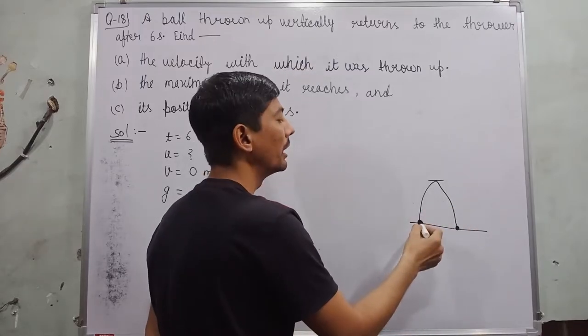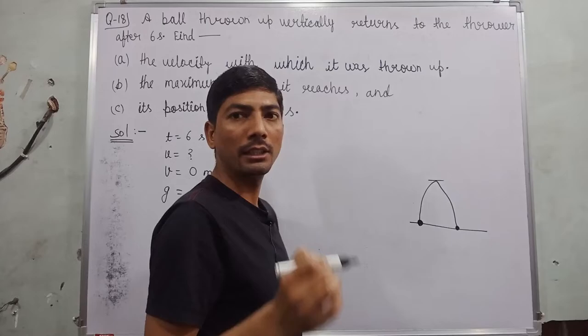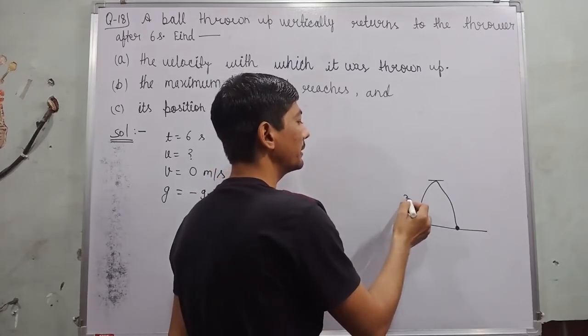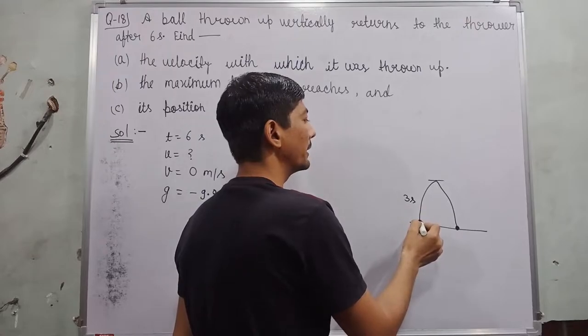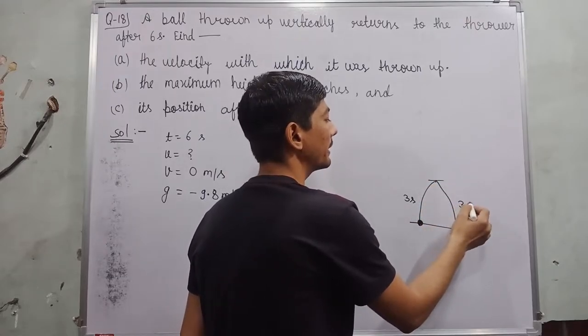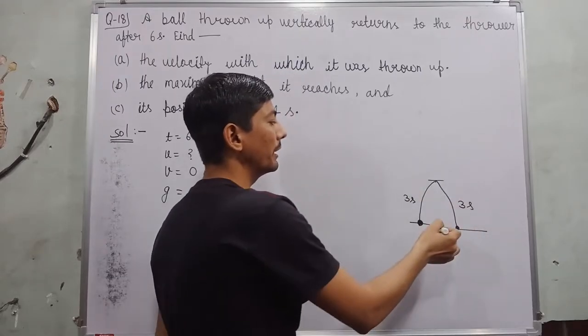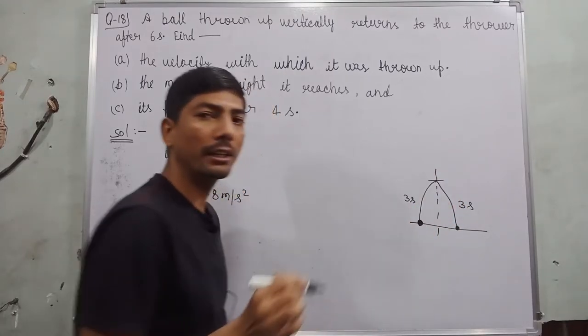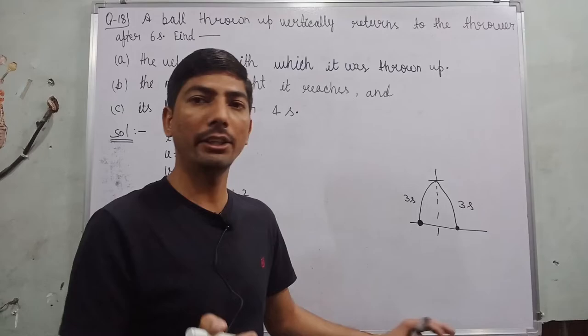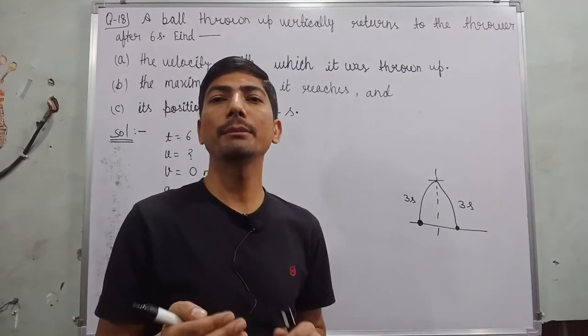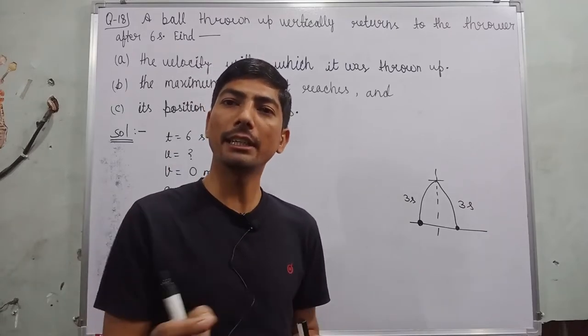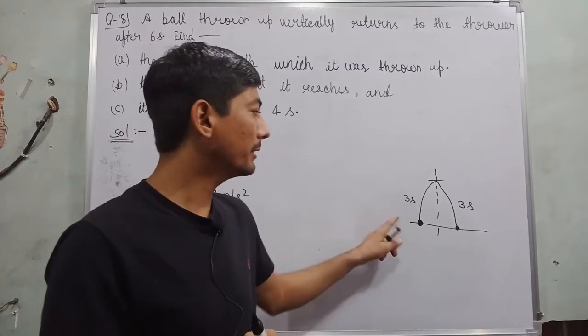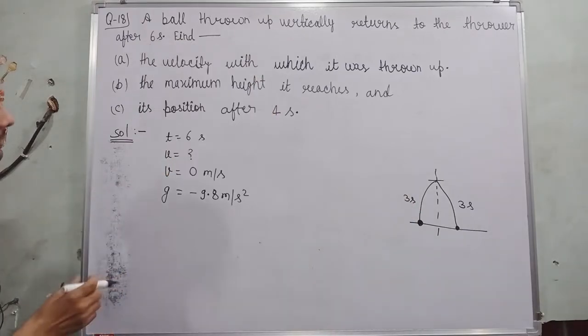A ball starts from here, goes to the maximum height and returns here. In this motion the ball takes total time 6 seconds, but it takes 3 seconds from here to here and it takes 3 seconds from here to here. It means in case of initial velocity, the time taken is 3 seconds, not 6 seconds. Maximum students do mistake here - they put time is equal to 6 seconds, but